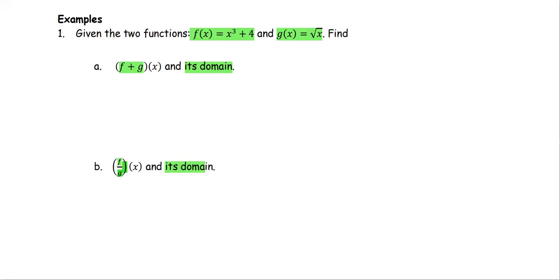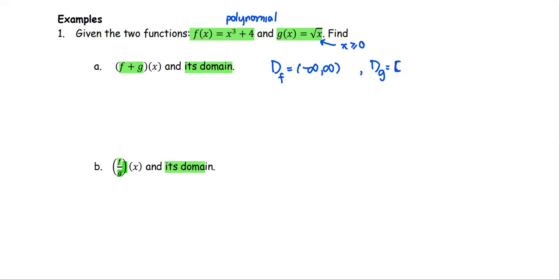For the first part, since the function f is x to the third plus four, which is a polynomial function, the domain of the function f is the set of all real numbers, because there is no restriction for a polynomial function. The function g is the square root of x — the index of the root is an even number, which means the radicand must be greater than or equal to zero, otherwise we will not get a real number result. The domain of g is the non-negative values of x, including zero, starting from zero to infinity — this is the square bracket, meaning we include the point zero.